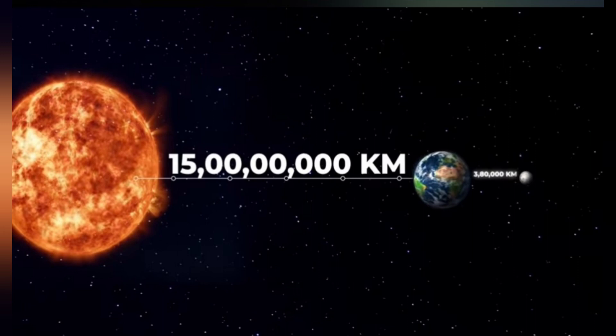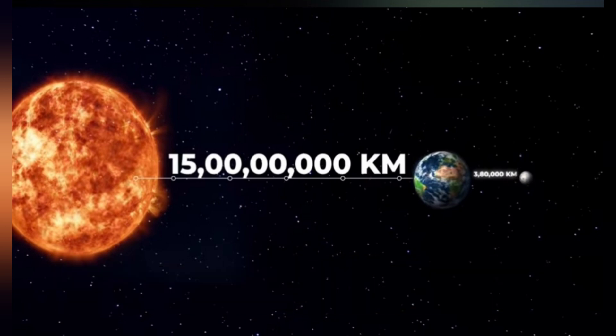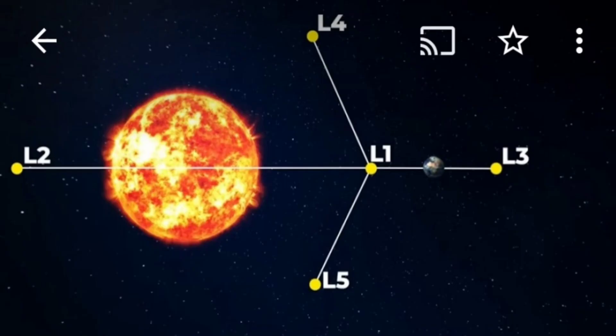Now our space center ISRO is launching the Aditya L1 mission, and it is the first space-based observatory class Indian solar mission to study the Sun. It will be placed in a halo orbit around the Lagrangian point of the Sun-Earth system.